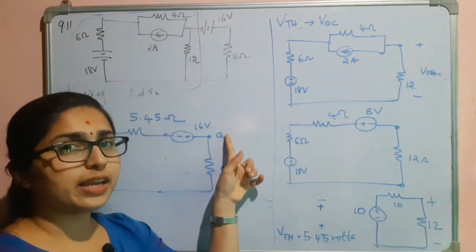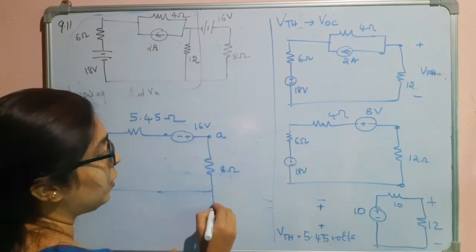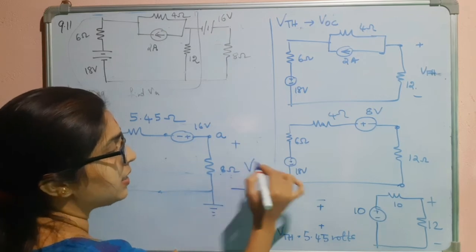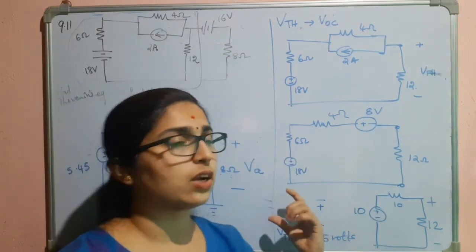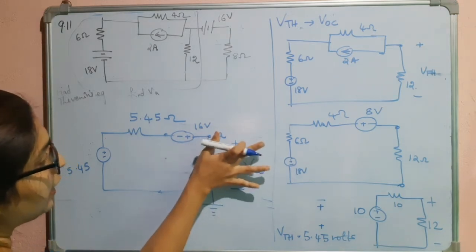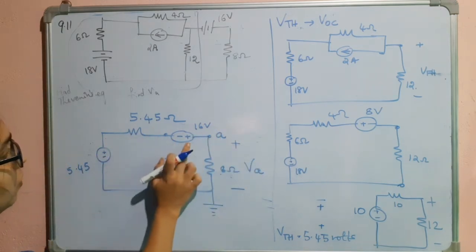So, now, we have to find in the third part, we have to find the voltage VA. Voltage VA is nothing but if I consider this as ground, this is the voltage VA. That is nothing but the voltage across the 8 ohm resistor. For that, I will keep this unaltered. I will simplify these two now.